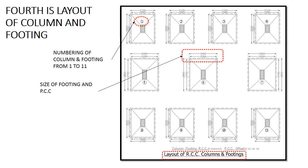Now that all cross sections and details in the structural drawing sheet have been studied, it is time to move on to the main drawing — the plan of footing and column with dimensions, numbering, and positions. It is called the layout of RCC column and footing. In the layout you can find the numbering of column and footing, generally given from left to right and from top to bottom starting with 1. Here 11 footings are in the drawing, so numbers 1 to 11 are given in sequence. Dimensions of footing and PCC are also determined from the layout.